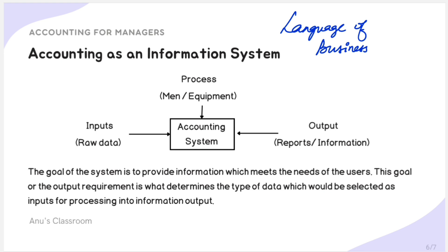The aim of accounting is to record transactions, classify, and then summarize to provide information to its users. The users of this information could be stakeholders, managers, investors, the government, or employees. Depending on the various users, they will look at the accounting information provided and make corresponding decisions. The main aim of the accounting system is to provide information that meets the needs of these users.